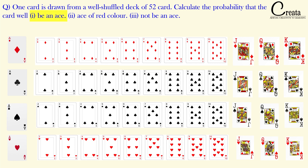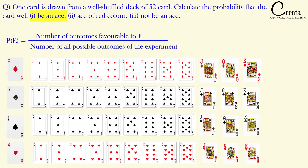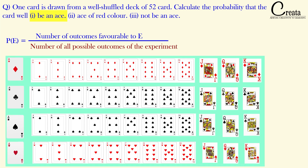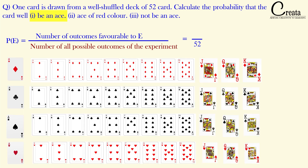Let's take case number 1 — we have to find the probability that the drawn card is an Ace. Using the formula of probability, we start with the denominator. The total outcomes are 52 cards, so 52 comes in the denominator. In the numerator, the favorable cases are the 4 Ace cards. So we got 4 in the numerator and 52 in the denominator. On solving, we get our answer as 1 by 13.